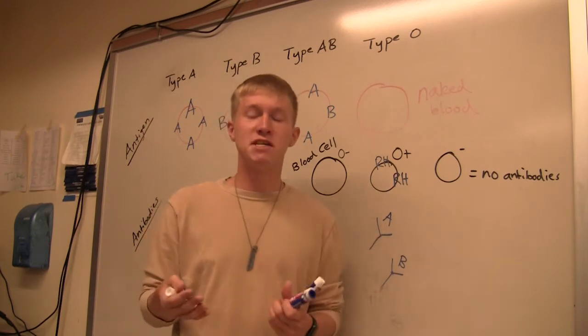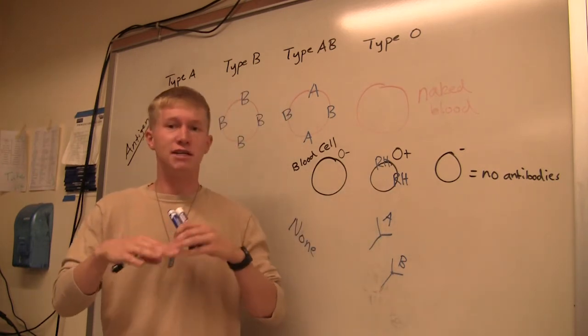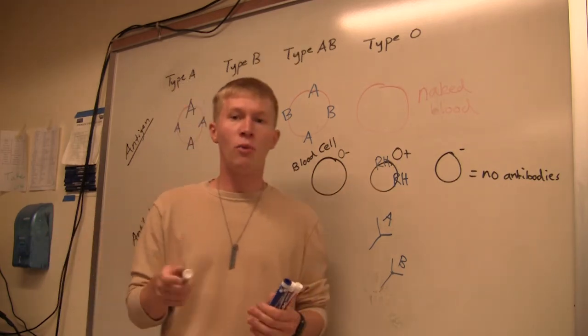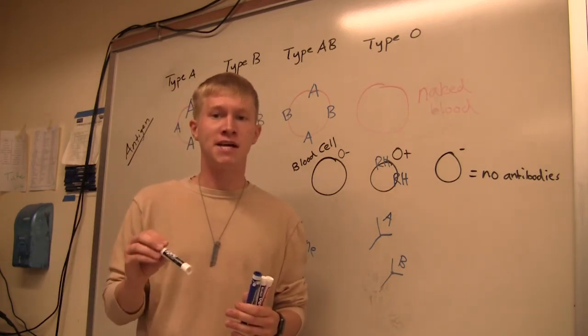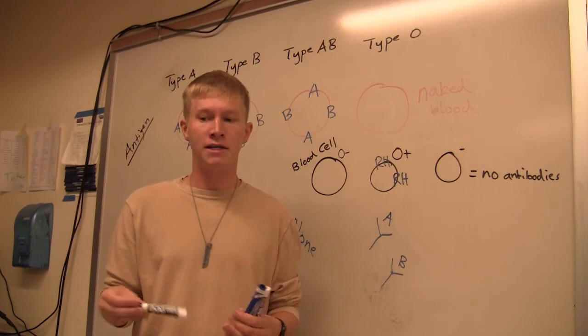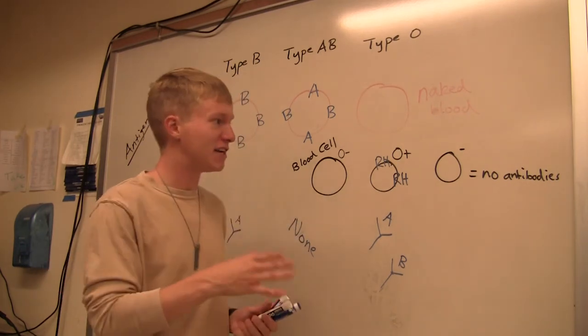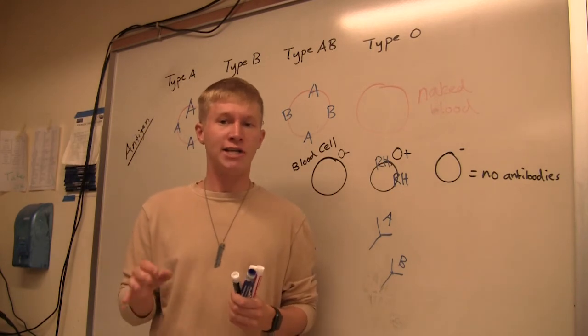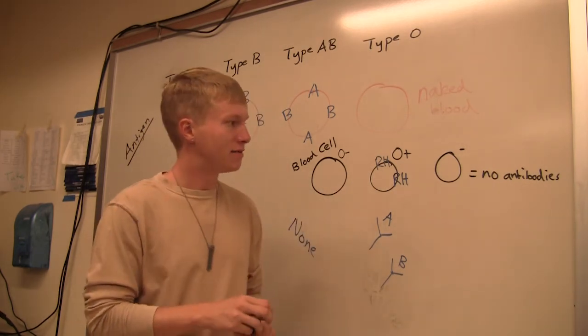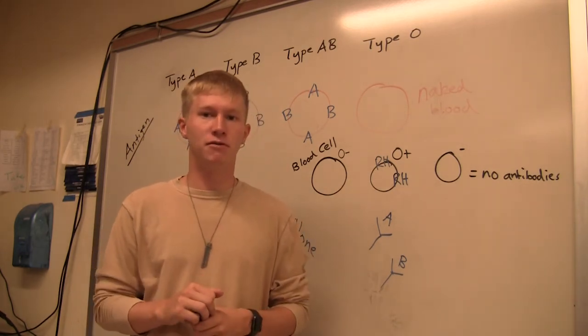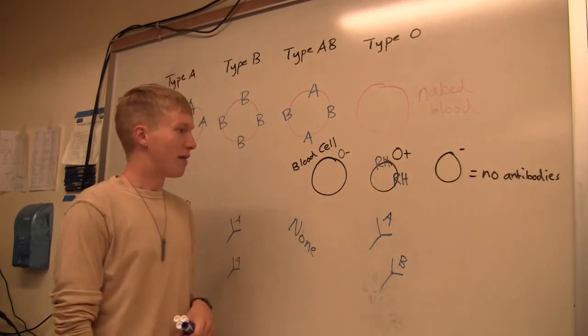For the purposes of your worksheet and in life in general, always assume that a negative blood type is going to have the antibodies. So when you guys fill out your worksheet in lab today, just assume that a negative blood type is going to have Rh antibodies. It's probably just best practice for life and all that.